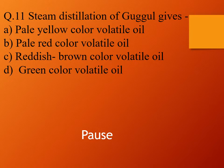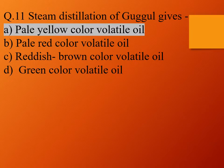Question 11. Steam distillation of guggul gives: option A, pale yellow color volatile oil; option B, pale red color volatile oil; option C, reddish brown volatile oil; and option D, green color volatile oil. The right answer is option A, pale yellow color volatile oil.